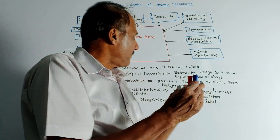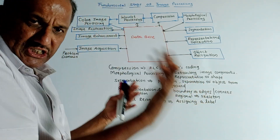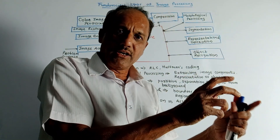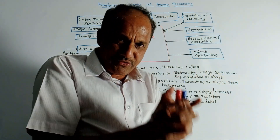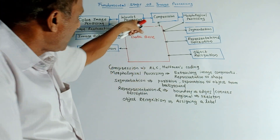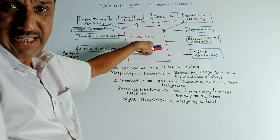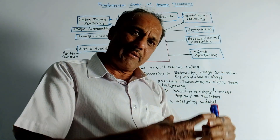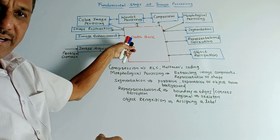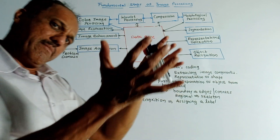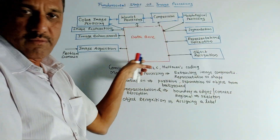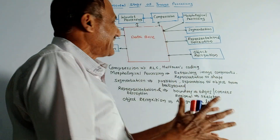The next block is object recognition. After performing description and all such stages, you need to assign a certain label to the captured object or image. This is done by object recognition. We also have the database — after capturing an image, we store it, and making use of this database, we can apply all these processing techniques.